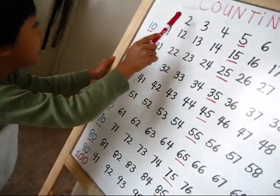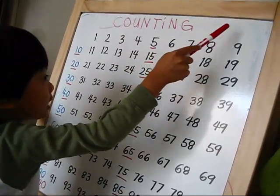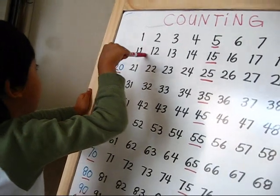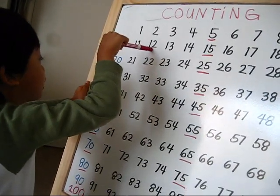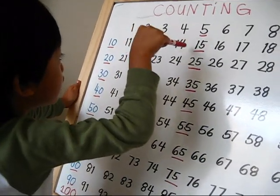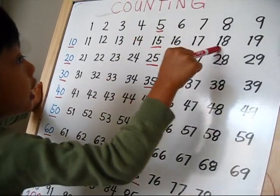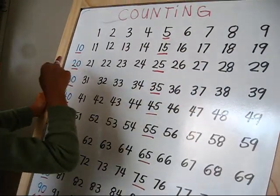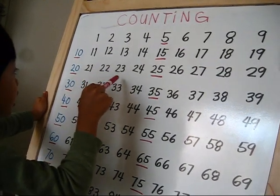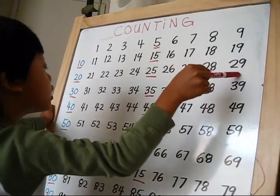1, 2, 3, 4, 5, 6, 7, 8, 9, 10, 11, 12, 13, 14, 15, 16, 17, 18, 19, 20, 21, 22, 23, 24, 25, 26, 27, 28, 29.